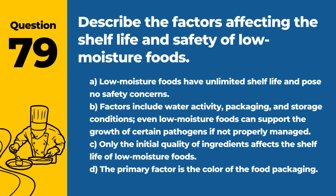Question 79. Describe the factors affecting the shelf life and safety of low-moisture foods. a. Low-moisture foods have unlimited shelf life and pose no safety concerns. b. Factors include water activity, packaging, and storage conditions. Even low-moisture foods can support the growth of certain pathogens if not properly managed. c. Only the initial quality of ingredients affects the shelf life of low-moisture foods. d. The primary factor is the color of the food packaging. Answer: b. Factors include water activity, packaging, and storage conditions. Even low-moisture foods can support the growth of certain pathogens if not properly managed. Proper management of these factors is crucial for ensuring the safety and quality of low-moisture foods.